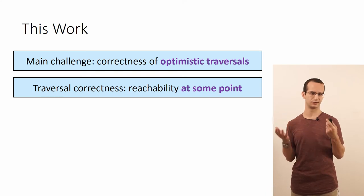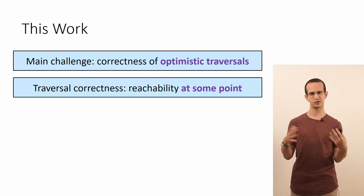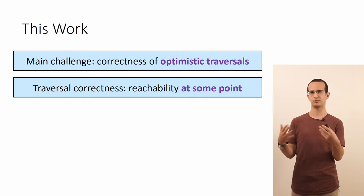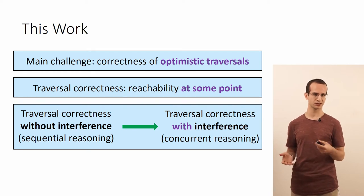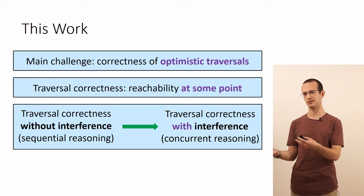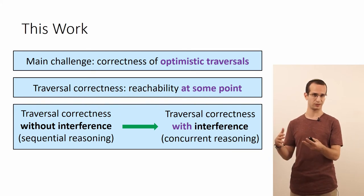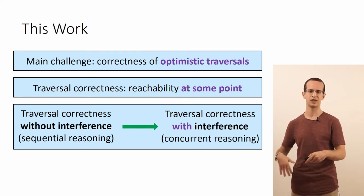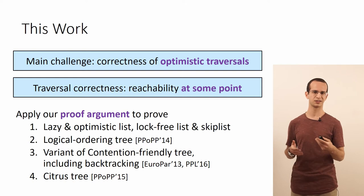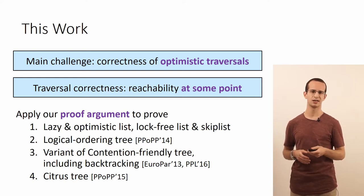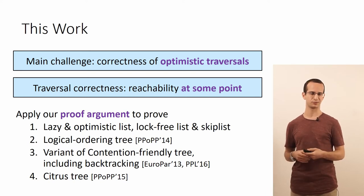So in this work, we identified the challenge of optimistic traversals as the key ingredient in the proofs of many interesting concurrent data structures. We formulate the correctness of traversals as guaranteeing the reachability of some nodes at some point in time during the traversal. And we provide a proof argument that's able to generate simple proofs of traversal correctness from the much simpler property of traversal correctness without interference using sequential reasoning. And we apply this approach to simplify the proof of several interesting concurrent data structures, including list-based data structures, the logical ordering tree, the contention-friendly tree including backtracking, and the Situs tree.